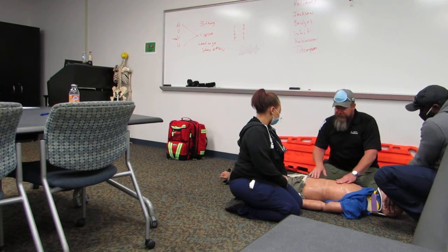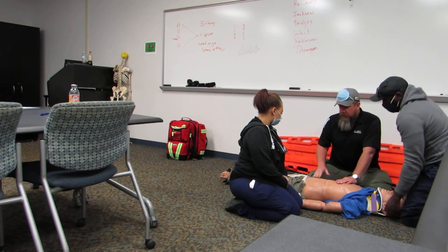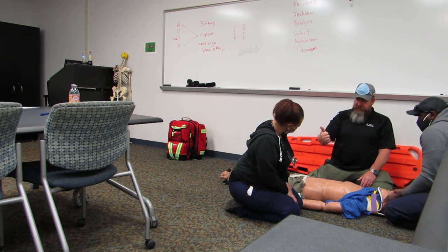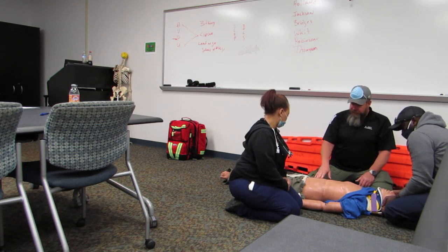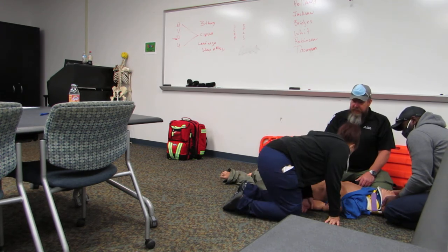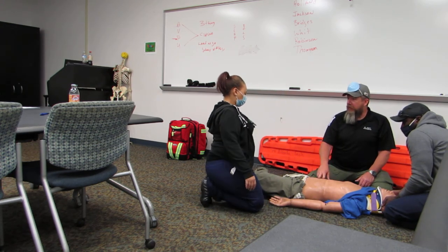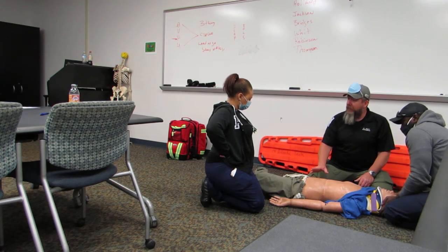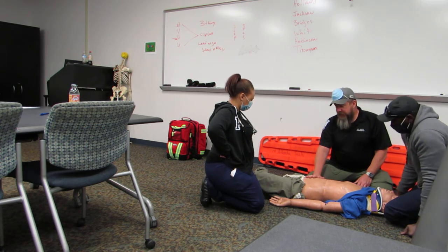Then I move down to the abdomen. I'm going to palpate all four quadrants. What am I looking for? Rigidity, tenderness, bruising, and pulsating masses. If I have a pulsating mass — that's an aneurysm, a lower aortic aneurysm. If we get something like that, our patient's in bad shape and we've got to go. So I finish with the abdomen.